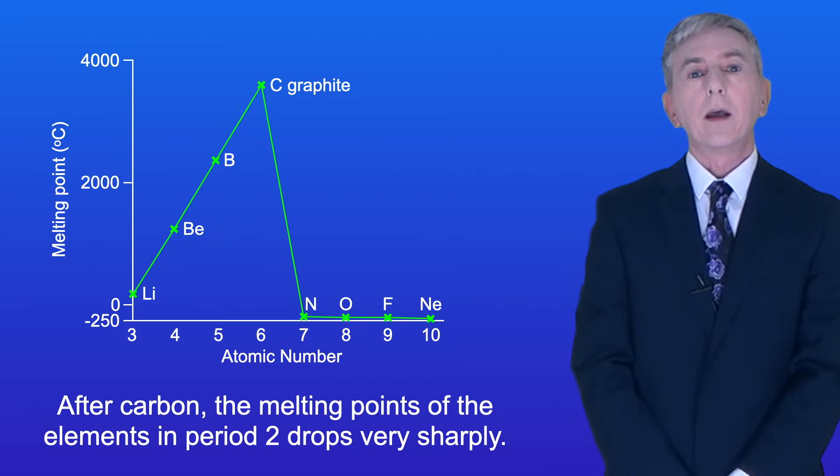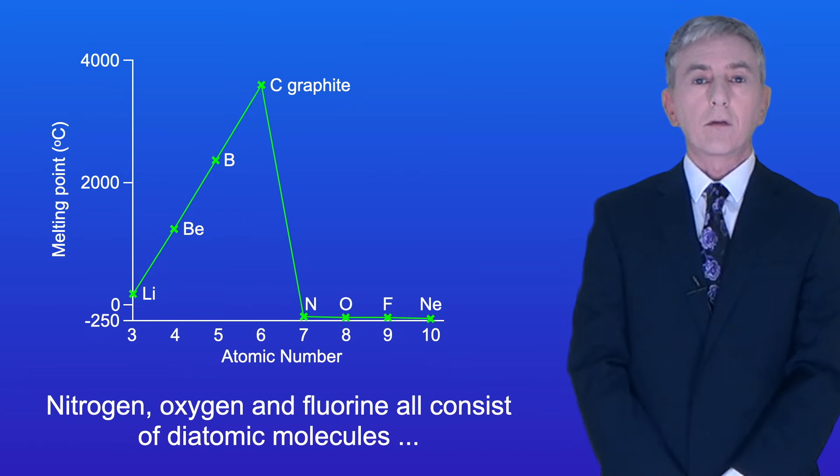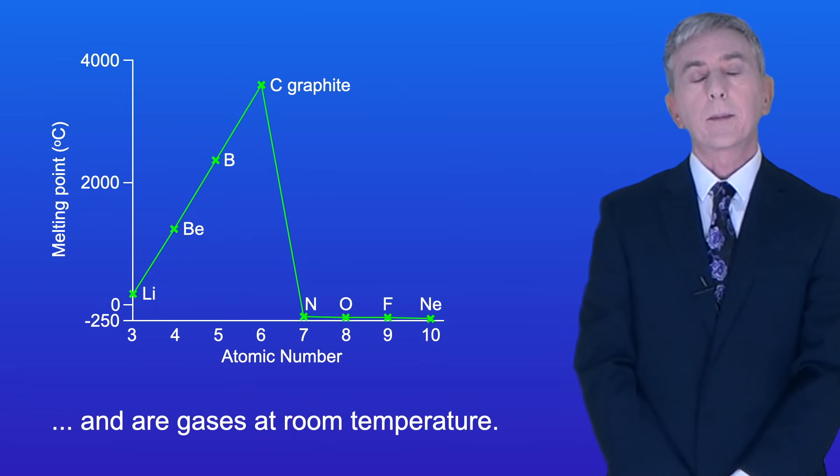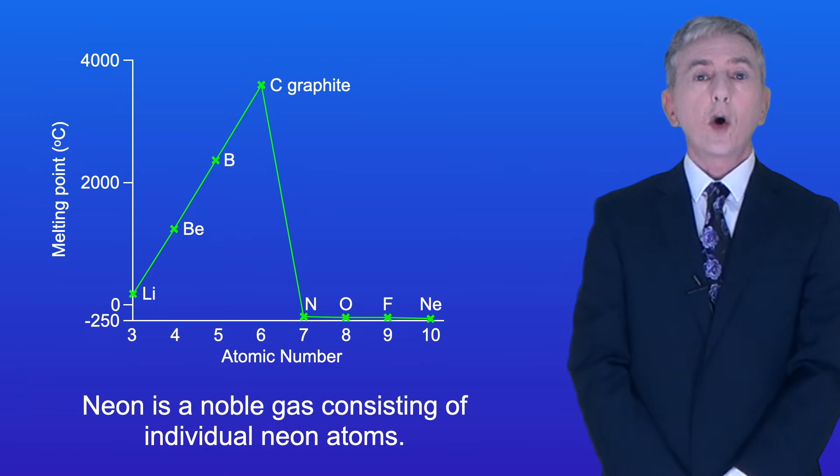Okay, now after carbon, the melting points of the elements in period 2 drops very sharply. Nitrogen, oxygen and fluorine all consist of diatomic molecules and are gases at room temperature. Neon is a noble gas consisting of individual neon atoms.